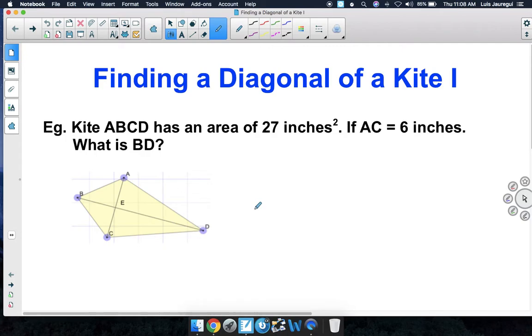Welcome. In this video, we'll be finding a diagonal of a kite, part 1. Let's take a look at our example. Kite ABCD has an area of 27 inches squared. If AC is equal to 6 inches, what is BD?